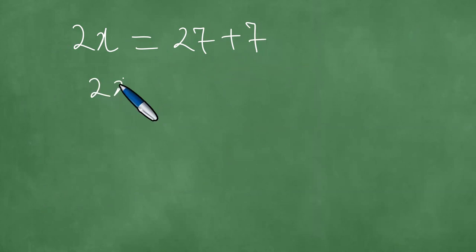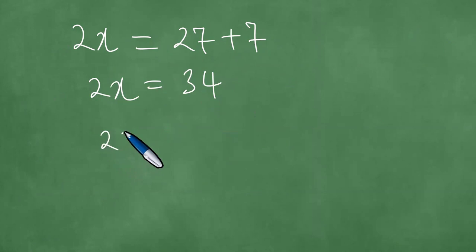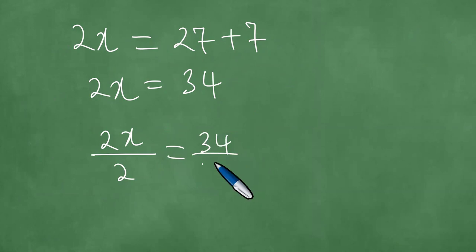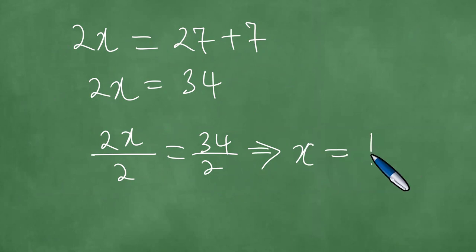So we have five x minus three x minus 27 equals seven. Five x minus three x is two x, which equals 27 plus seven. Two x equals 34, and dividing both sides by two gives x equals 17.